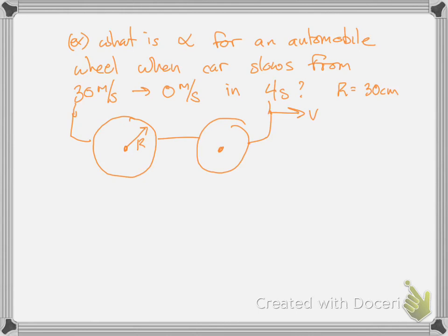Let's do an example. What is the angular acceleration for an automobile wheel? The car slows down from 30 meters per second to zero meters per second in four seconds. The radius of the wheel is 30 centimeters. What's the angular acceleration of the wheel when the car slows in the forward direction from 30 meters per second to zero?